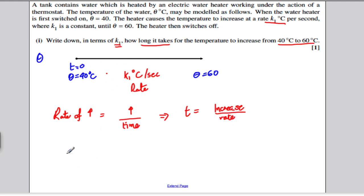So if we want to work out this time in terms of K1, the time is simply the increase, which is 60 minus 40, all divided by the rate, which is K1. So simplifying that, T must be equal to 20 divided by K1. And an easy first part for one mark.